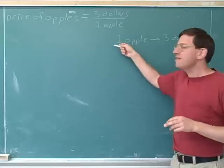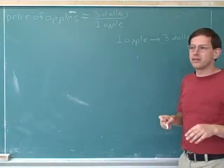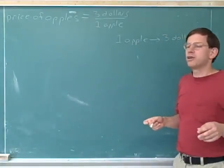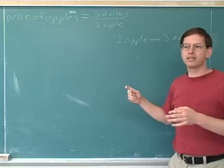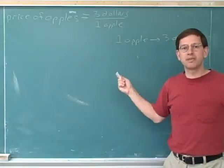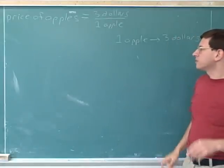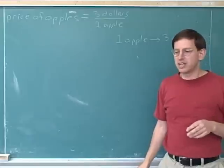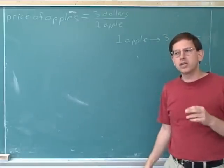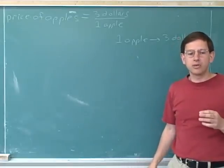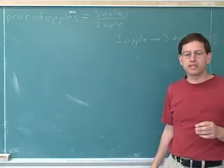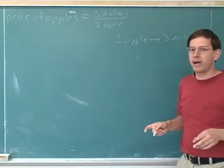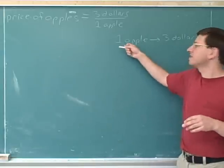Notice here we're saying that if you bought one apple, then it would cost you three dollars. This is a hypothetical statement. If you hypothetically bought one apple, it would cost you three dollars. So far I haven't told you anything about how many apples you actually bought. Maybe you bought one apple, maybe you bought five apples, or maybe you didn't buy any apples at all. Ratio units don't tell you what is actually happening — they tell you about something hypothetical. Ratio units always give you hypothetical information about what could happen. If the price of apples is three dollars per apple, I'm not telling you that you actually bought one apple; I'm just telling you what would happen if you did decide to buy one apple.